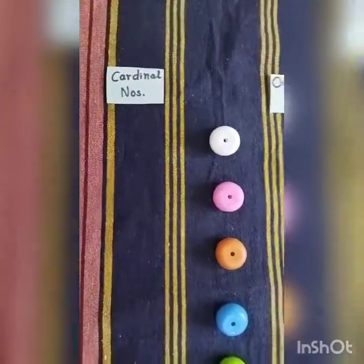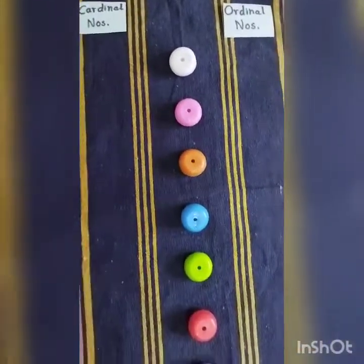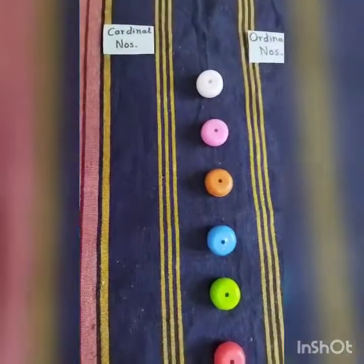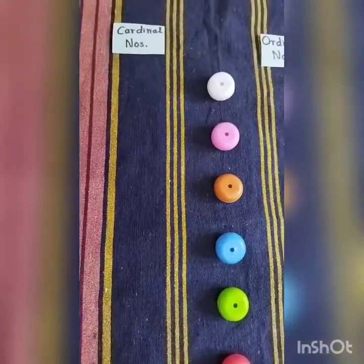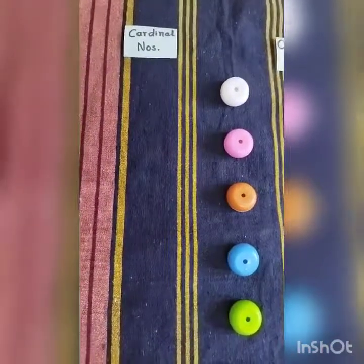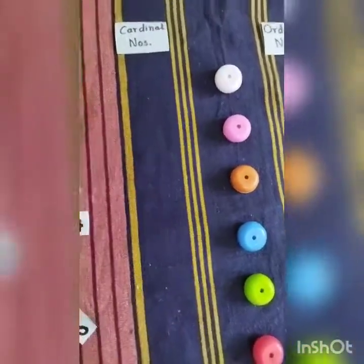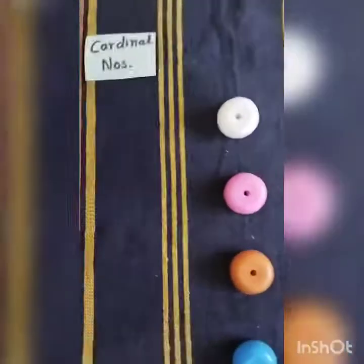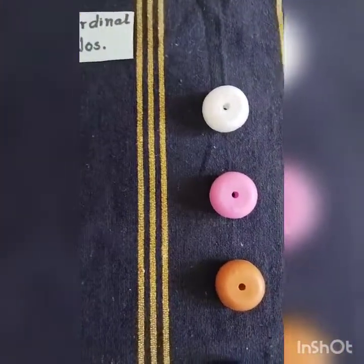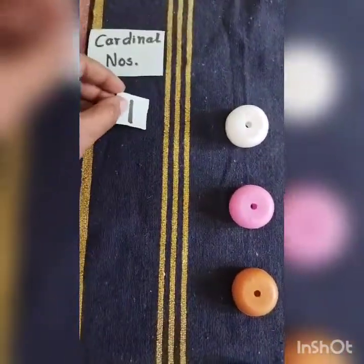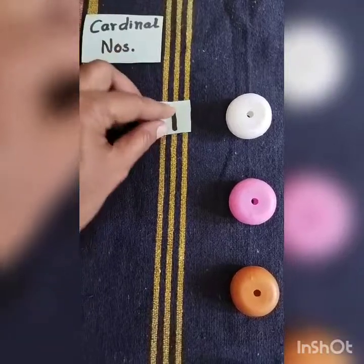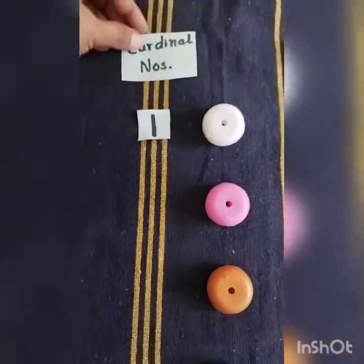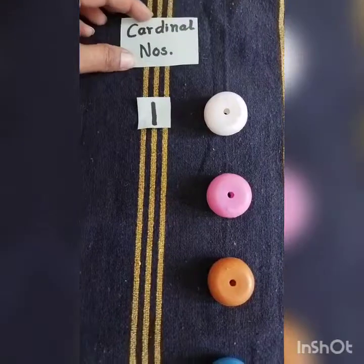Here you can see the different colors of beads. So we will count them. 1, 2, 3. Here we can see the white bead. The white bead is on number 1, so we will say it 1. And 1 is a cardinal number.